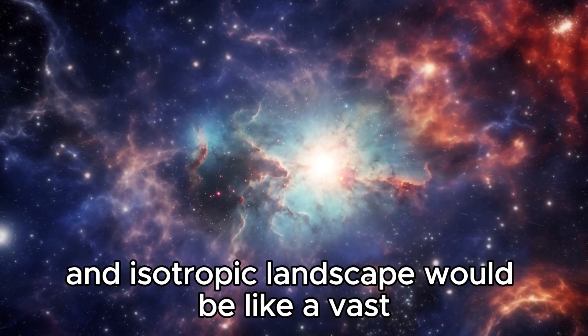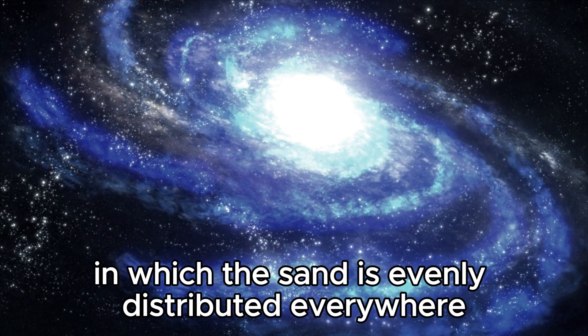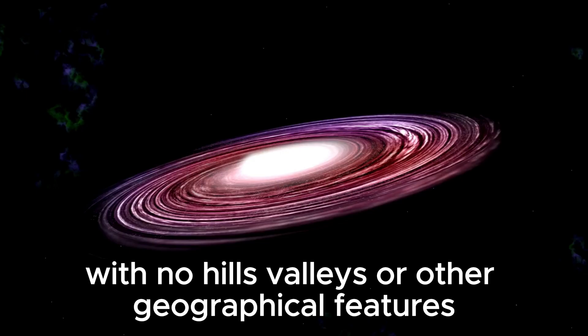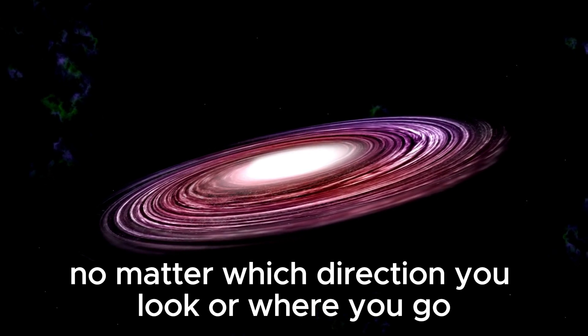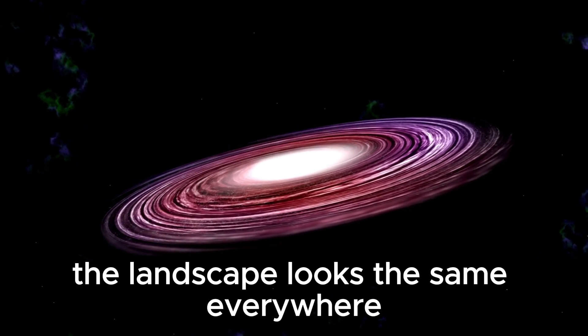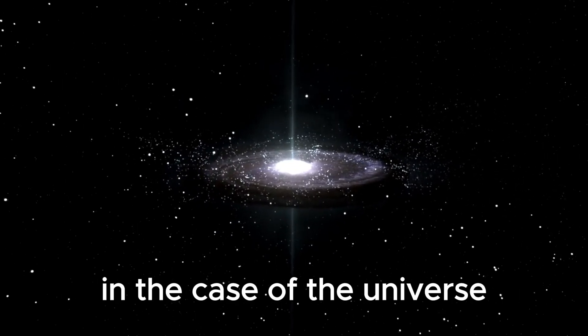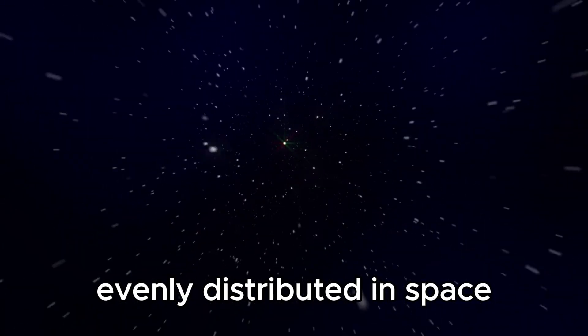Let's compare this to a landscape. A homogeneous and isotropic landscape would be like a vast, endless desert in which the sand is evenly distributed everywhere, with no hills, valleys, or other geographical features. No matter which direction you look or where you go, the landscape looks the same everywhere, and there are no preferred or special places. In the case of the universe, this would mean that stars, galaxies, cosmic nebulae, and other phenomena are roughly evenly distributed in space.